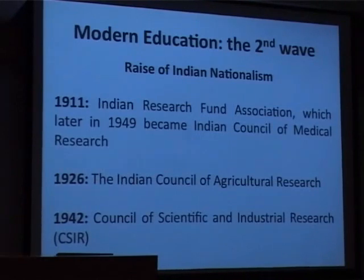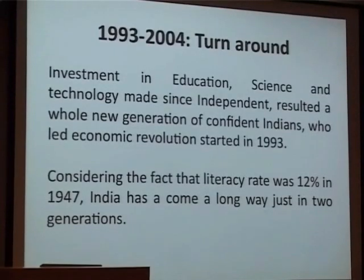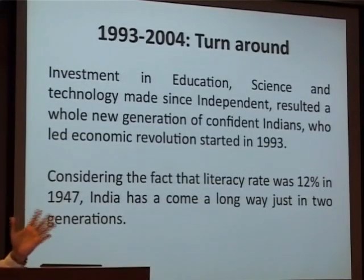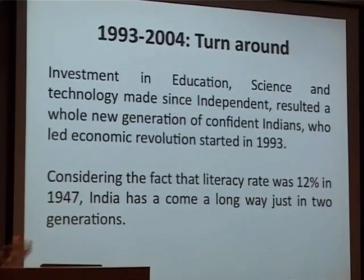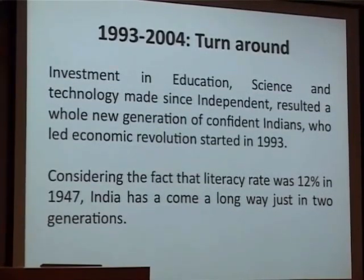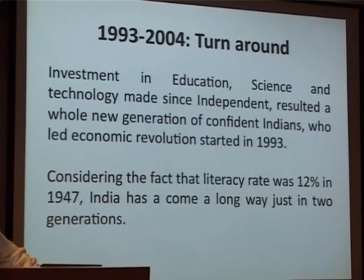1926 is when the Indian Council of Agriculture Research started - originally called the Imperial Council of Agriculture Research. And 1942 is when CSIR started. Because of this role-model approach, there was quick expansion of efforts started in the 1950s to a larger part of the country. There were only 5 IITs set up, but the impact of those IITs is much larger country-wide because so many institutes are trying to copy the IIT model. This helped change the literacy rate and the science and technology establishment of the country.